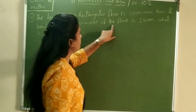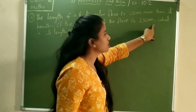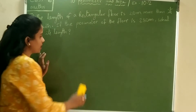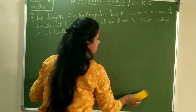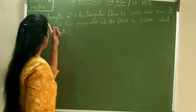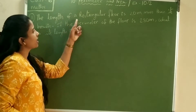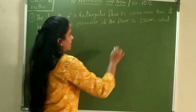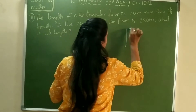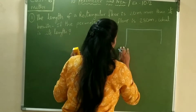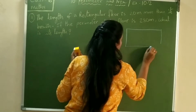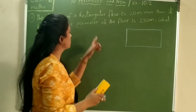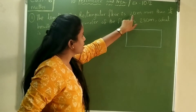The length of a rectangular floor is 20 meters more than its breadth. If the perimeter of the floor is 280 meters, what is its length? First, see what they have given. The floor is in a rectangular shape, so first draw a rectangular floor.